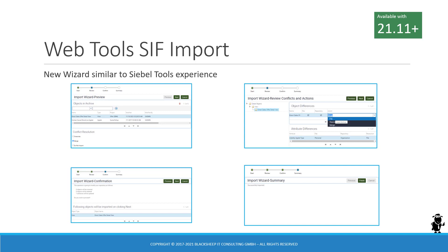There is a veritable wizard available, which is built on the trusty task UI architecture. You get a new task essentially inserted into your database and activated by the post installation database update. The wizard implements the familiar Siebel Tools experience: you are prompted to select a CIF file, which is then consumed and you see the objects in the CIF file in the first panel. You have conflict resolution, and clicking next shows you the object differences and allows you to select the detailed action, such as take what's in the file, keep what's in the repository, or merge.